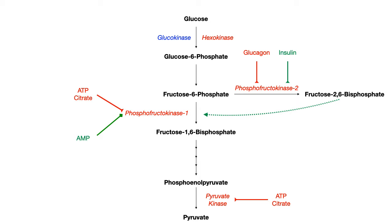That's it for glycolysis. You don't need to worry about all the other enzymes for USMLE and COMLEX — focus on the enzymes covered here, the regulatory mechanisms, and the difference between glucokinase and hexokinase. The other intermediary steps won't show up on your test unless you're in a college-level biochemistry course. This is what you need to know to answer 99% of questions on USMLE, COMLEX, question banks, and practice tests.